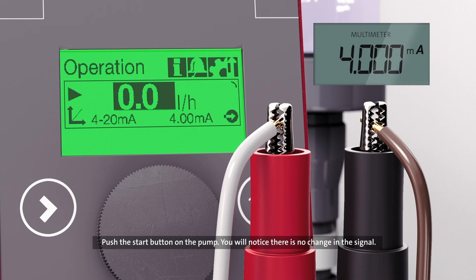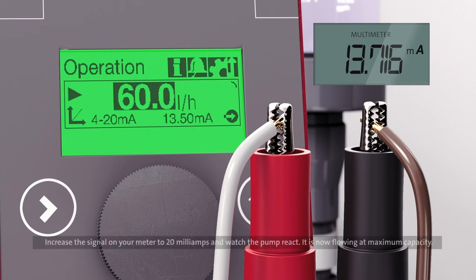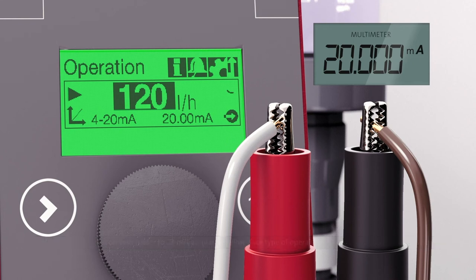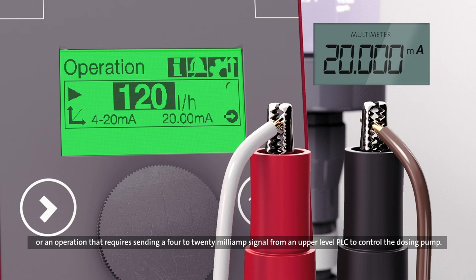You will notice there is no change in the signal. Increase the signal on your meter to 20 milliamps and watch the pump react. It is now flowing at maximum capacity. This is very similar to a flow paced type of operation, or an operation that requires sending a 4 to 20 milliamp signal from an upper level PLC to control the dosing pump.